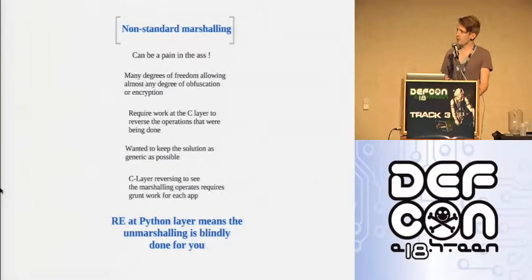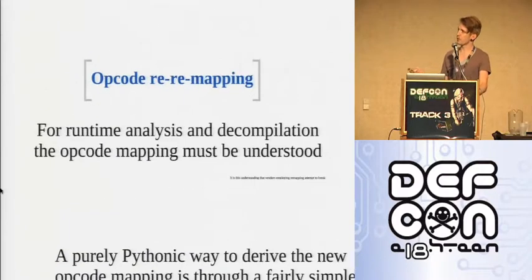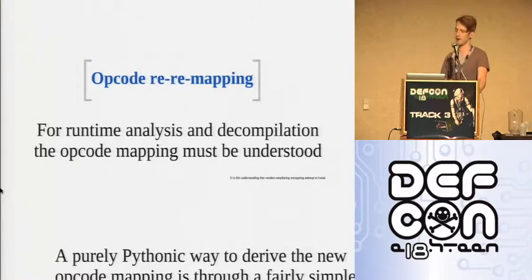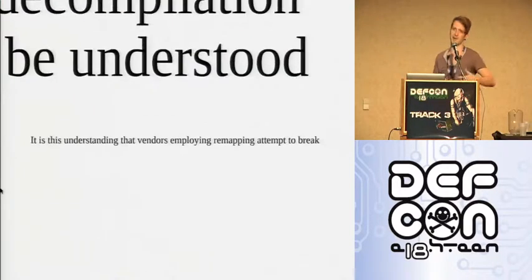Non-standard marshalling can be a real pain, but I didn't put effort into undoing their marshalling because as soon as you're in the Python runtime they've already undone it — so we completely sidestep the problem and access it at the Python layer. For opcode remapping, we have to re-remap their opcode mappings — the integer-to-instruction maps — at runtime, since we don't have access to opcode.py, so we need to reproduce it.